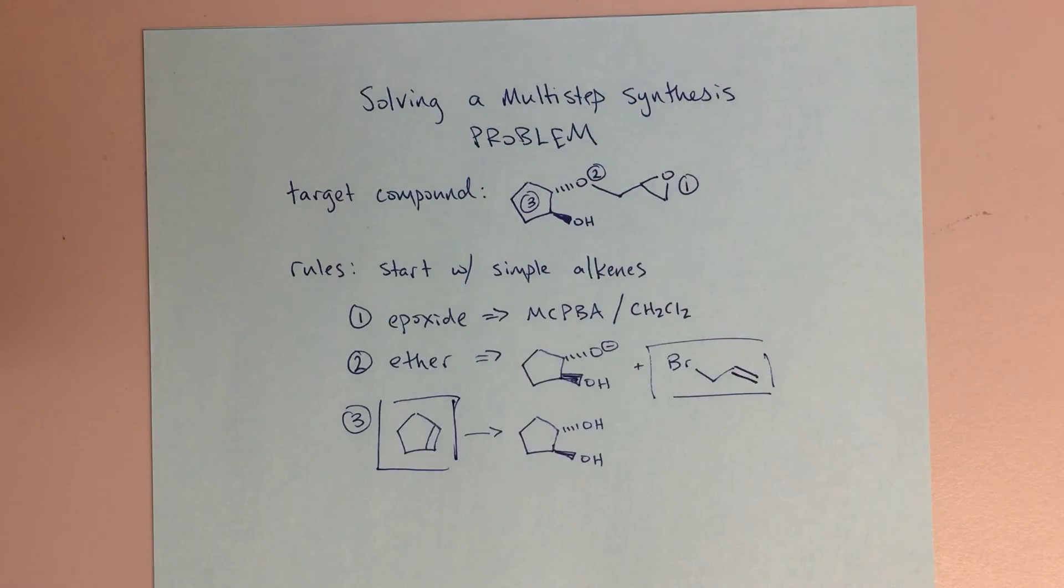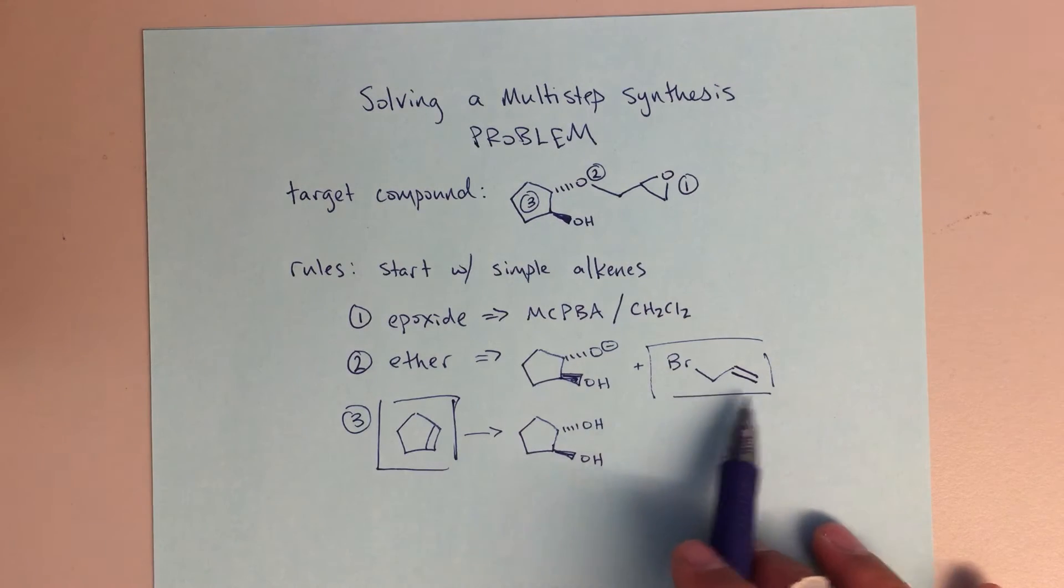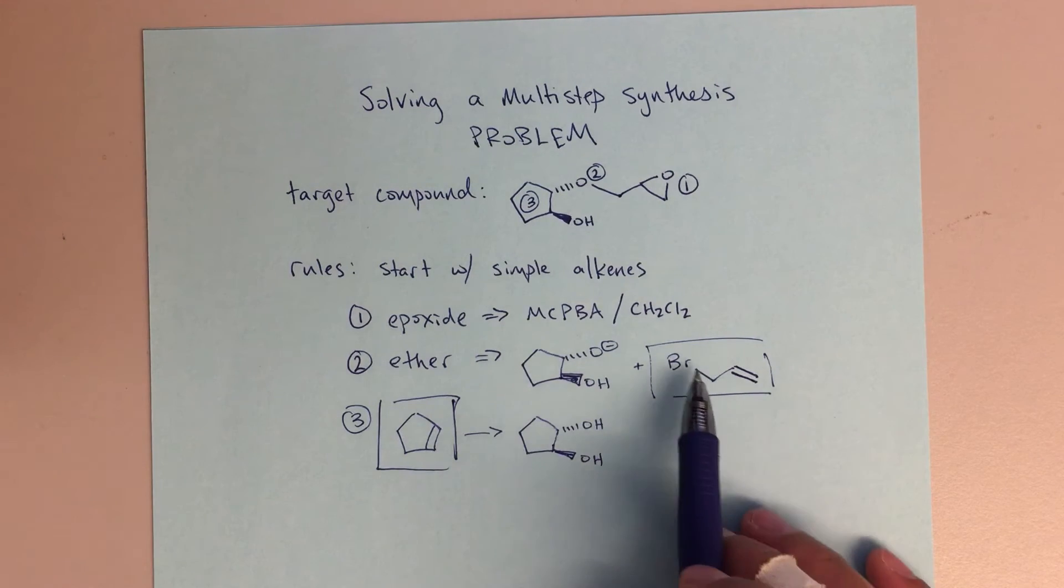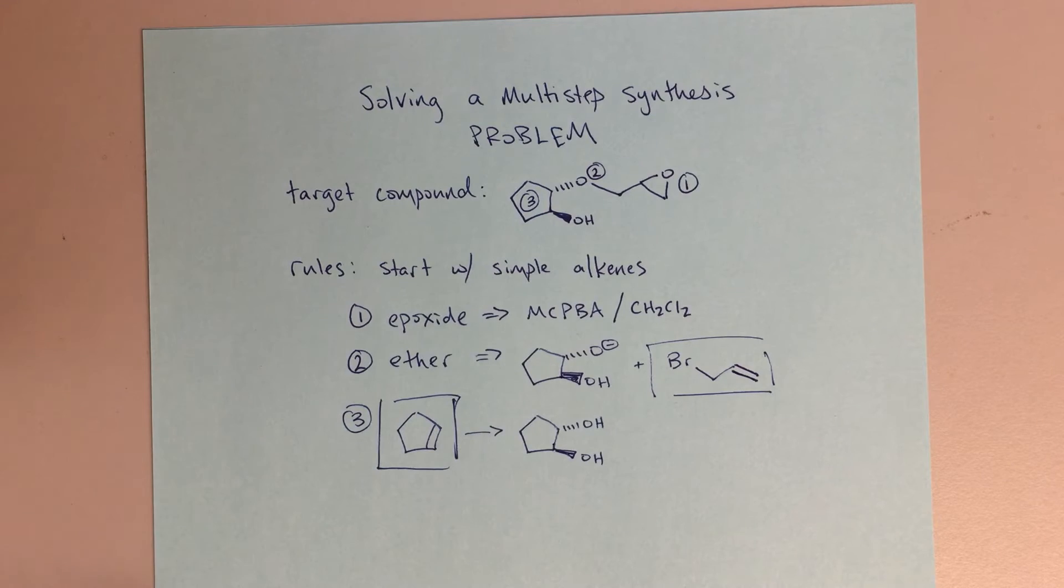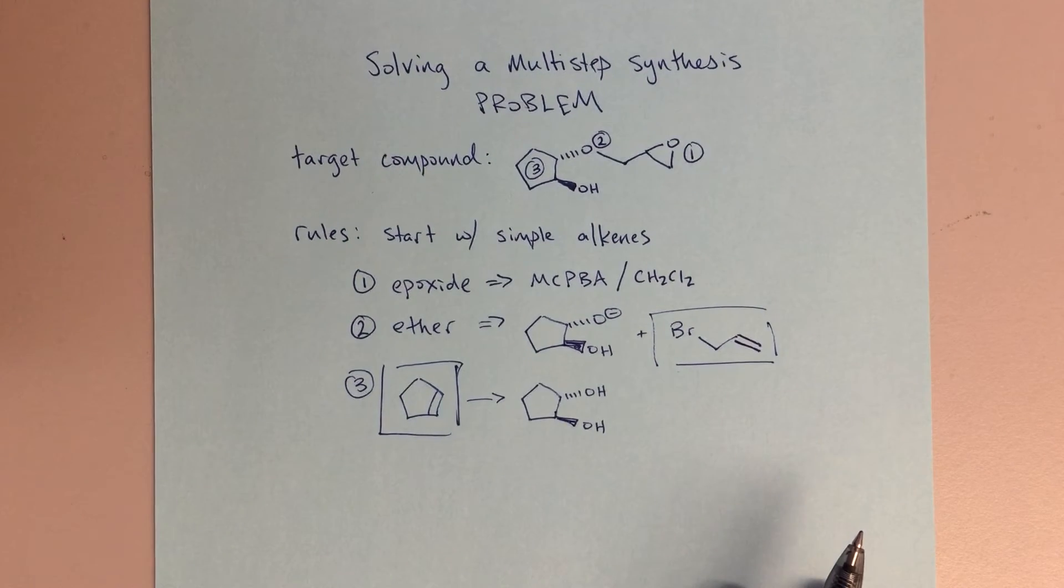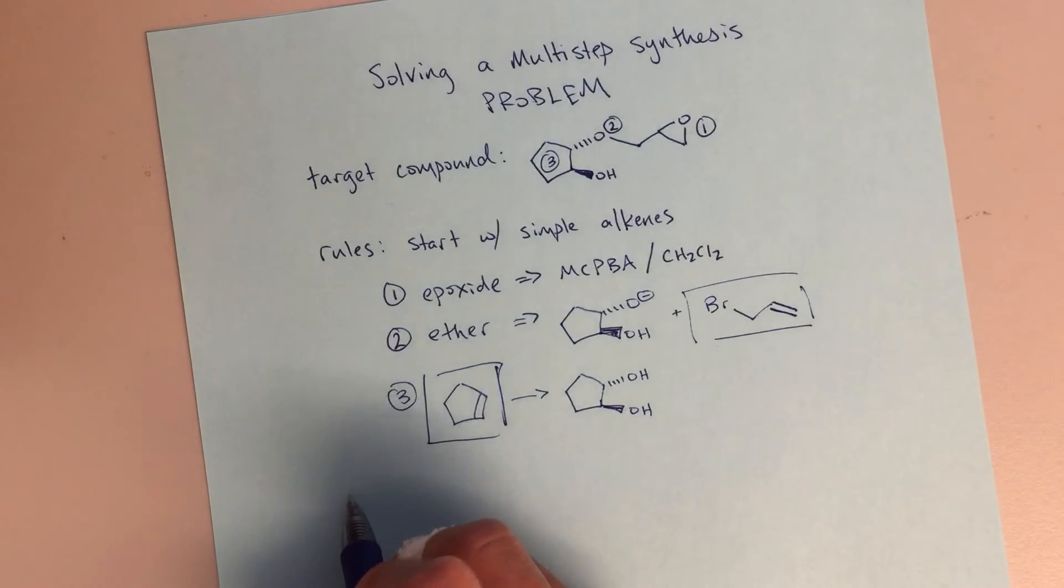Now I think we're sort of ready to see if we can put it all together. I'm going to start from this cyclopentene, I'm going to use this as my other simple alkene. Let's go ahead and start our synthesis.